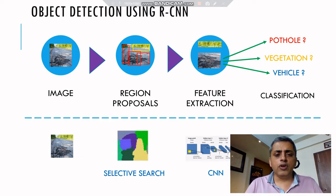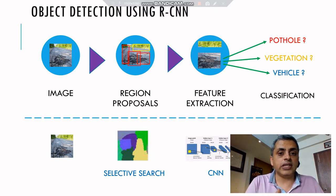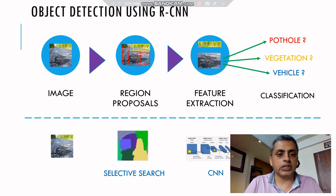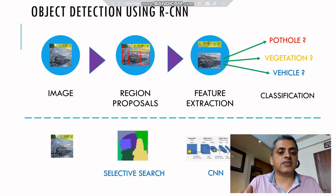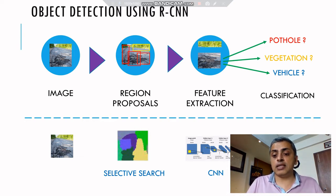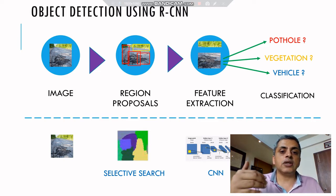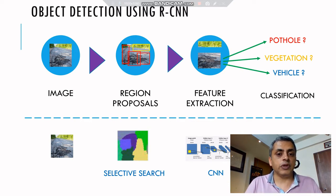In RCNN, there are different moving parts. The first is the selective search algorithm itself — a separate algorithm used to select and propose regions that likely contain an object. Then the last part is the classification, which was based on SVMs. SVMs were traditionally used for classification in the first RCNN.